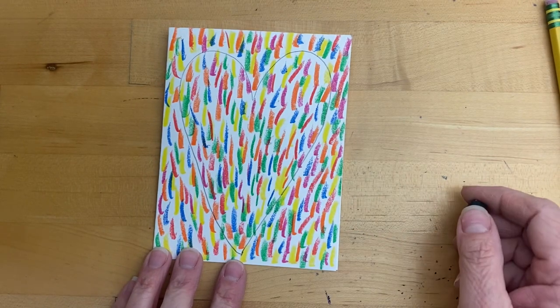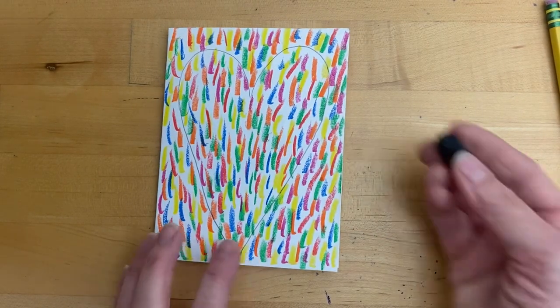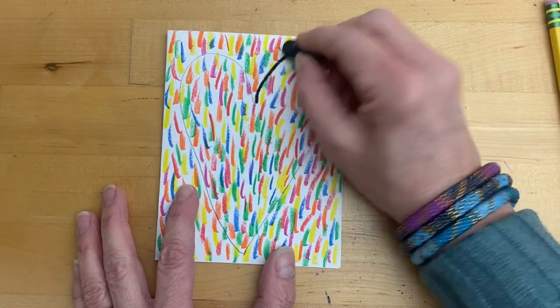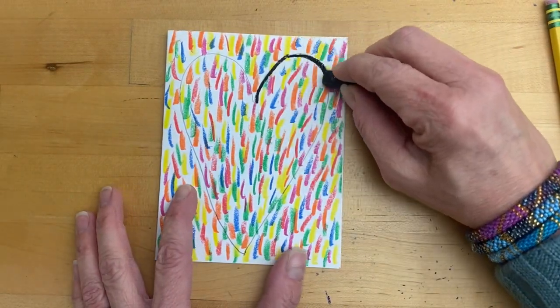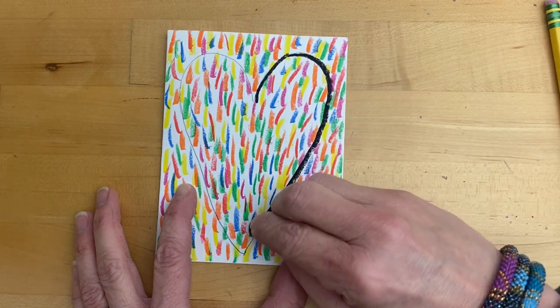You can use a black marker, or a black crayon, or a black oil pastel. And then we're going to carefully trace over that heart that we created to start with.